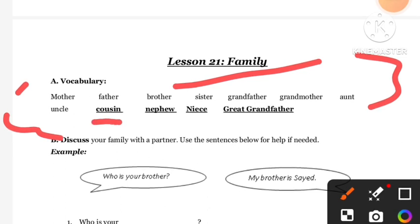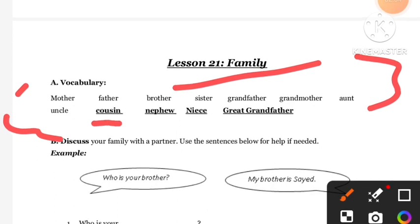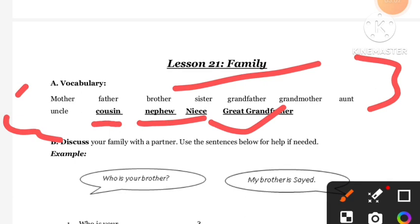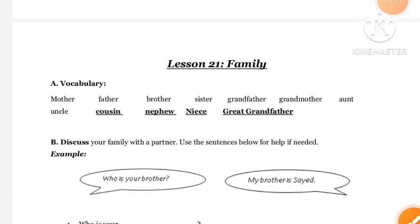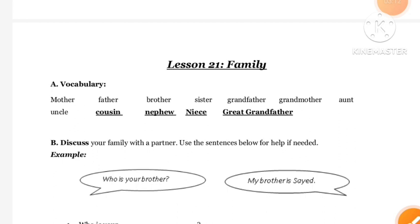While watching the video, you need to understand words like: cousin means step brother or sister — in Hindi, chhere bhai ya bahan. Nephew means bhanja or batija, and niece means bhanji or batiji. Great grandfather means your grandfather's father.